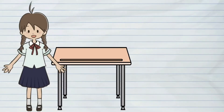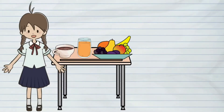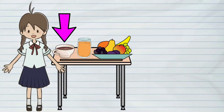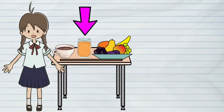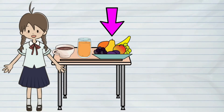Looking at the picture, you can observe that the girl prepared various mixtures on the table. These mixtures include coffee, orange juice, and different fruits.